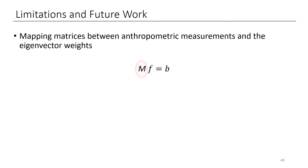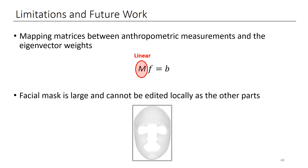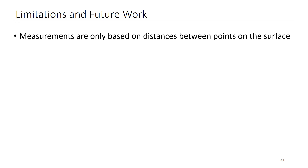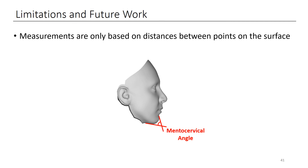One limitation of our approach is the mapping matrices that assume a linear relationship between anthropometric measurements and the eigenvector weights. An interesting avenue for future work would be to apply machine learning to identify non-linear mappings. Also, the facial mask is large and cannot be edited locally like the other parts. Our measurements are based on distances between points on the surface; future work could consider measurements based on curvature over the face, such as measurements specifying the angle formed at the tip of the chin.